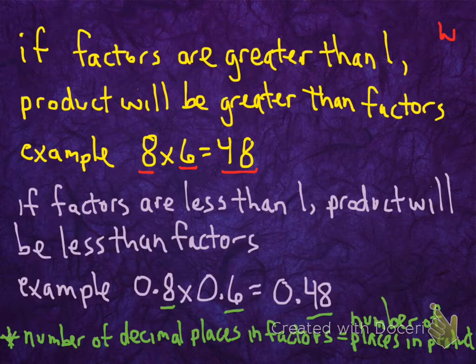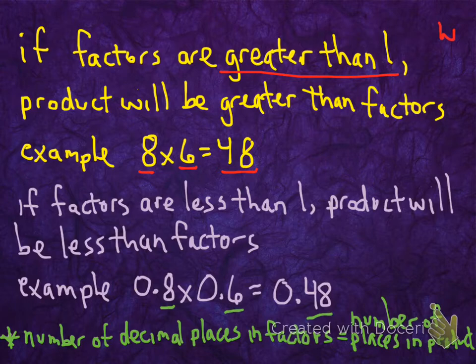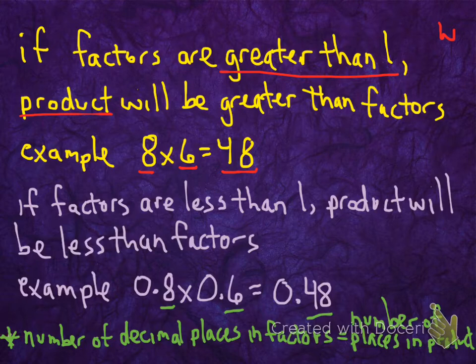Those are just terms for multiplication, right? So we can see that 48 is greater than 8 and also greater than 6. Those factors are greater than 1 because 8 is greater than 1 and 6 is greater than 1. Therefore, our product will be greater than the factors themselves. 48 is greater than 8 and also greater than 6.